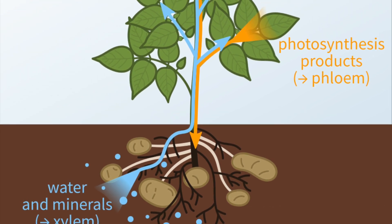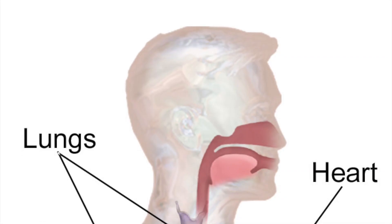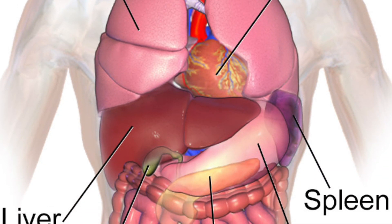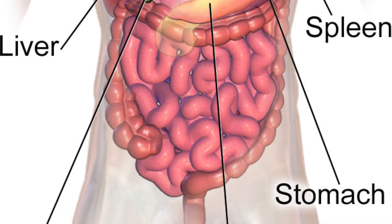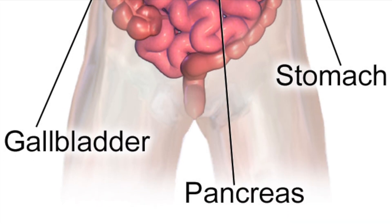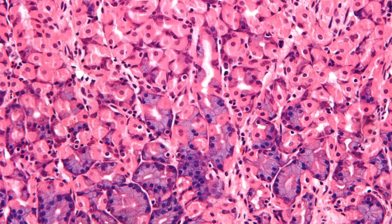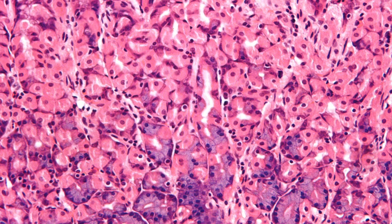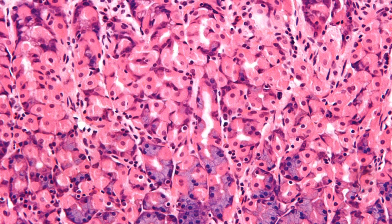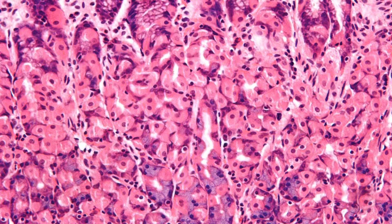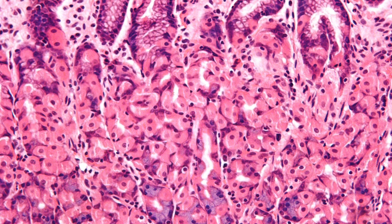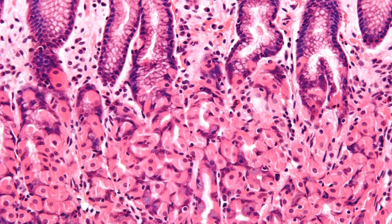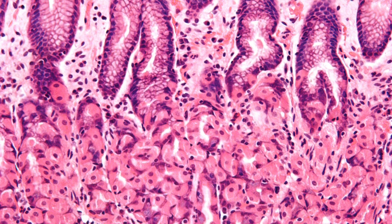Next up we need to look at organs. Organs are made of tissues, and for example one organ is the stomach which is involved in digestion. The muscular tissue churns up the food and digestive juices, the glandular tissue releases the digestive juices to break down the food, and the epithelial tissues cover the inside and outside of the organ.